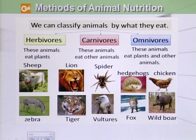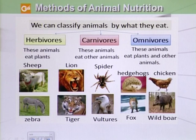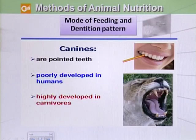Then we have a third class called omnivores. These animals eat both plants and animals. Examples include hedgehogs, chicken, fox, and wild boar.